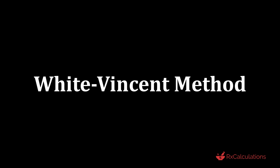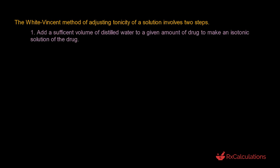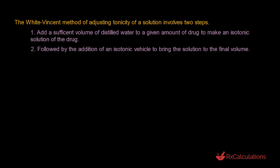Before we get to solving the questions, let's do a quick recall of some important points about the White Vincent method. It involves two steps. The first step requires you to add a sufficient volume of distilled water to a given amount of drug to make an isotonic solution of the drug. Then you follow up by adding an isotonic vehicle to bring the solution to the final volume of your preparation.